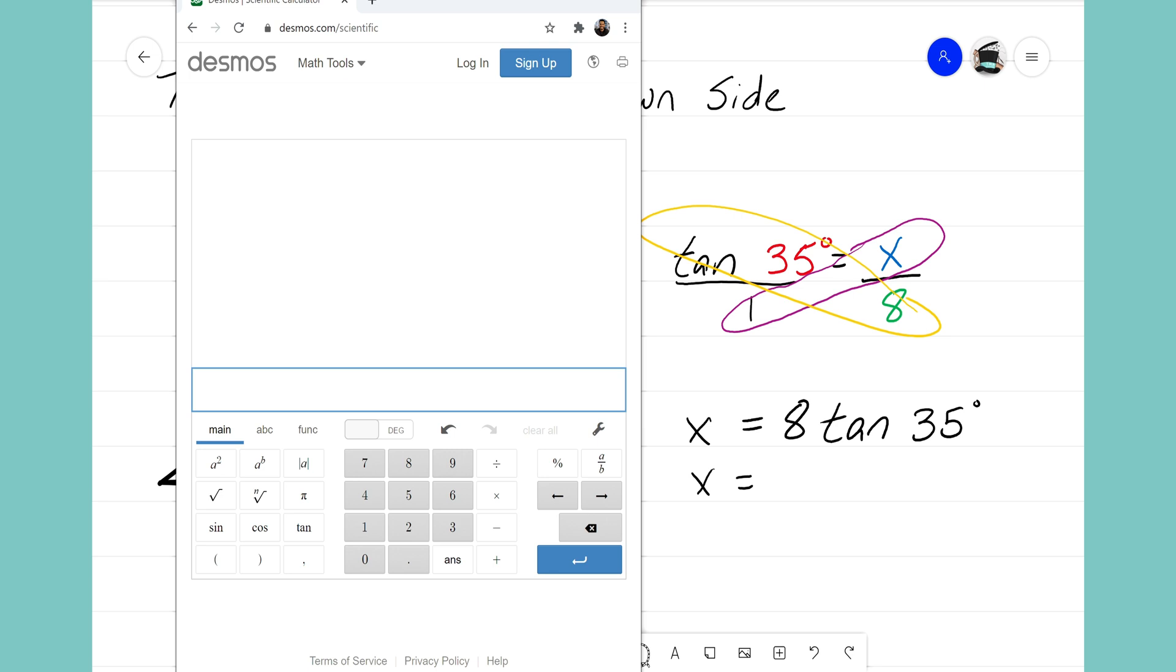Now at this point we just need to enter this expression into our calculator. We'll go ahead and press 8. We'll type in the tangent function. I see that my tangent function is right here. And inside the parentheses I'm going to type in the angle. The angle here is 35 degrees.